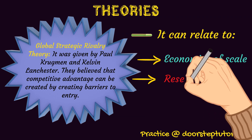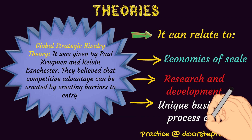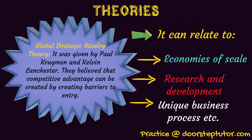Then there is research and development — you are doing so much research and development that other people cannot reach that level. Your products are of such high quality, like Apple, which is one of the best products in today's world. The other barrier is unique business processes — creating a unique process of doing work that saves time and cost. So by making products better, cheaper, or faster than others, you can create barriers to entry for other firms. These are all the things the Global Strategic Rivalry Theory talks about.